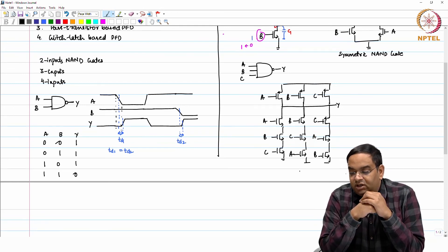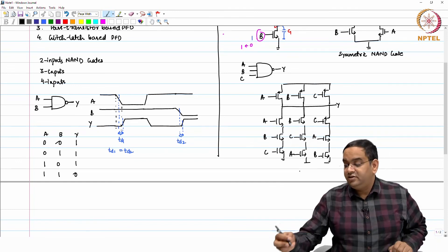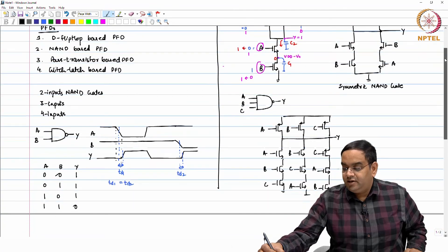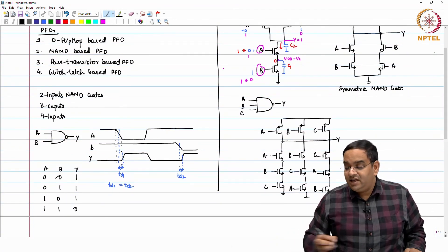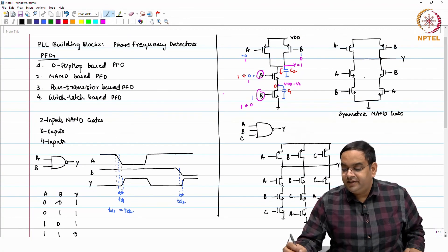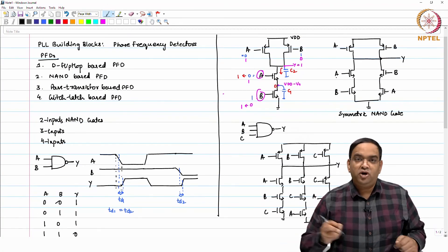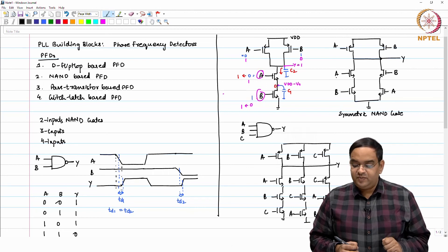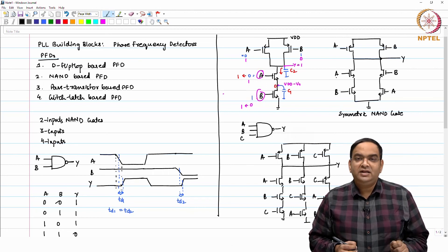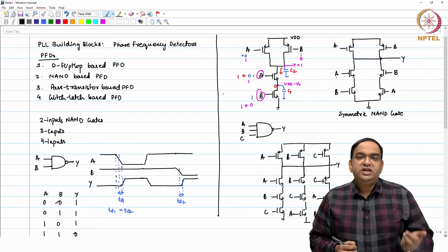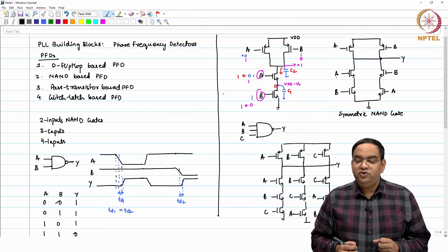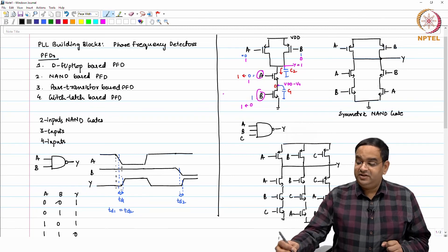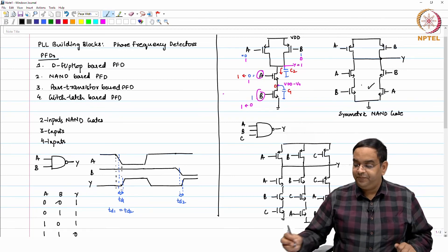Somewhere you have to make peace with the transitions and then you can use it. But ideally, if you ask me the question, if I do not want any variation with respect to the change at the input to the change in the output, if I do not want any change in the delays, the transition delays, then I should use all possible combinations like this.